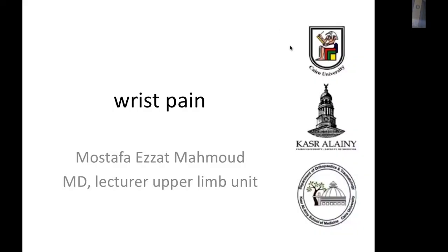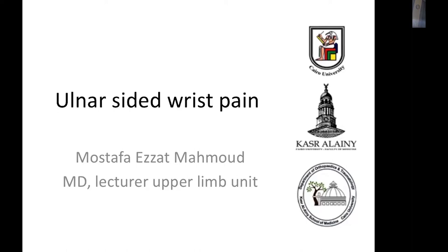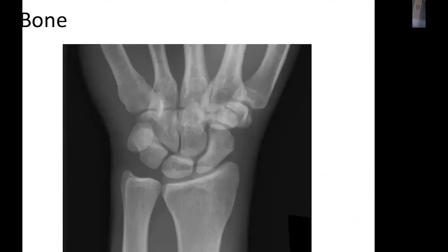We will discuss rest pain, going rapidly to cover all the causes. Starting with ulnar-side rest pain, which could be either from bony origin, like the lunate, the triquetrum, the pisiform, the hamate, the DRUJ, and the CMC joint. Any pathology in this bony side can lead to ulnar-side rest pain.